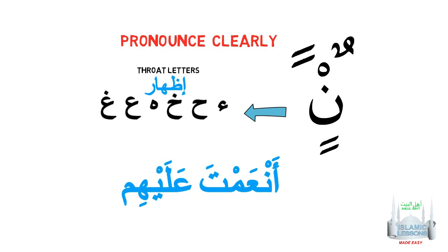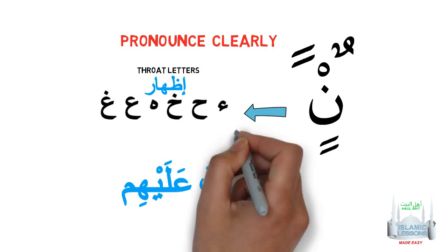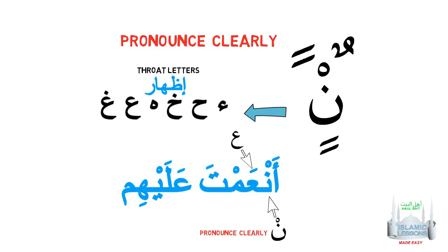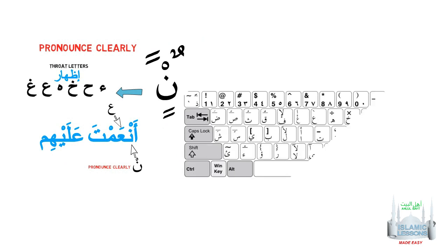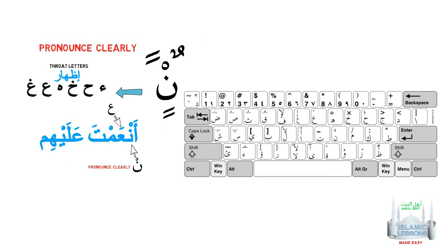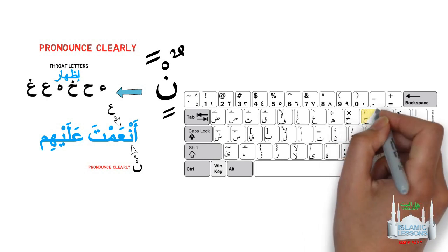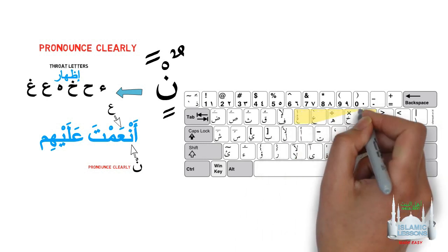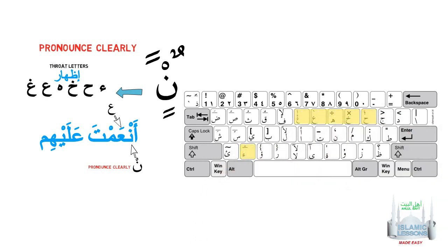For example, it reads an'amta alayhim — I did not say it with ikhfa or gunna. An easy way to remember these letters is by looking at your common Arabic keyboard. If we start at the letter h, all five of them are next to each other except for the hamza.